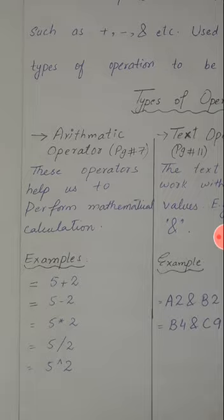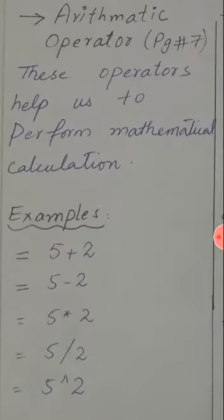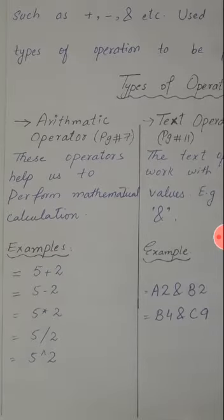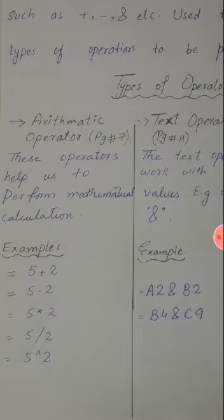Examples: 5 plus 2, 5 minus 2, 5 times 2, 5 divided by 2, 5 to the power of 2. In all these examples plus, minus, asterisk, division and exponent signs are called mathematical arithmetic operators.